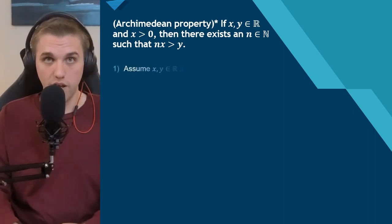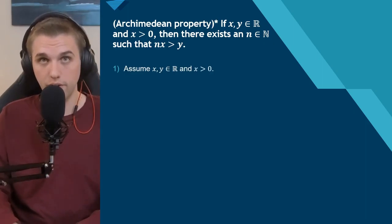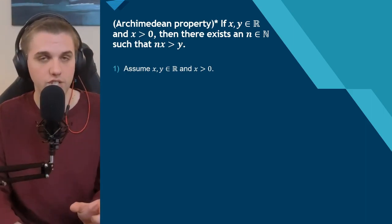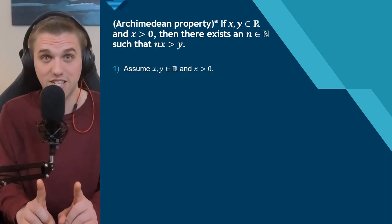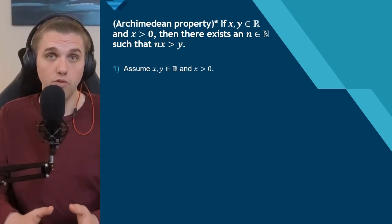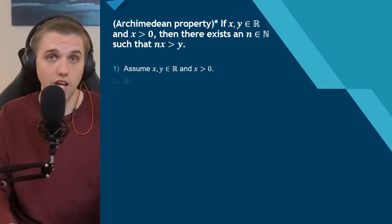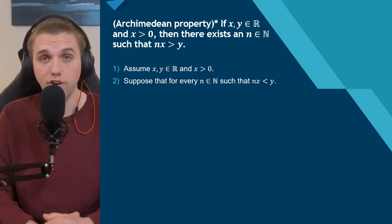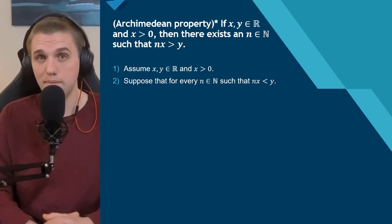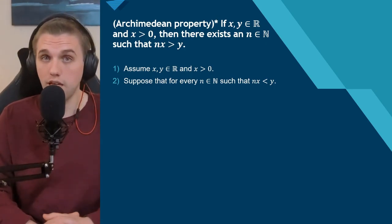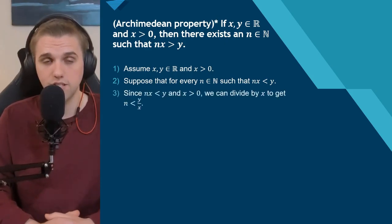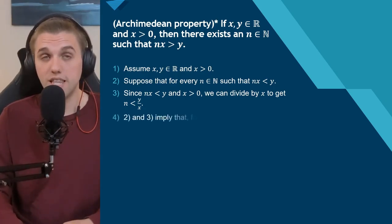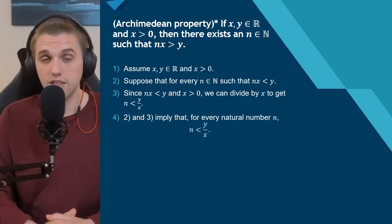So let's prove the Archimedean property for the real number line. We assume x and y are real numbers with x > 0, and we prove by contradiction: suppose that for every natural number n, nx < y — meaning you cannot measure y with a sufficient amount of x's. Since x > 0, we can divide both sides by x to get n < y/x for every natural number n.